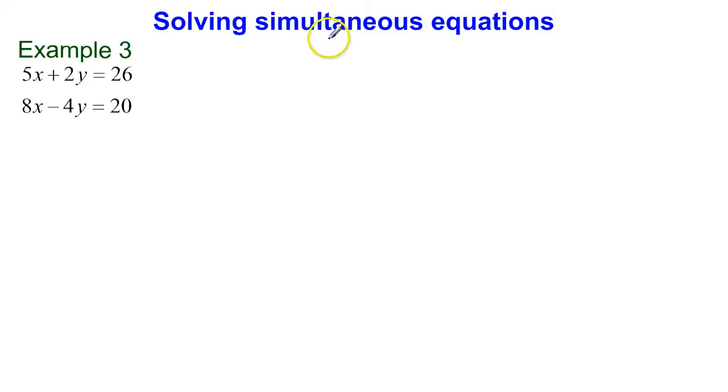Hi, this is our third video on solving simultaneous equations by elimination. This time we've got something similar to our previous example. The difference here is that we've now got a plus here and a subtract here. What we're going to do is have a look at how we can deal with that.